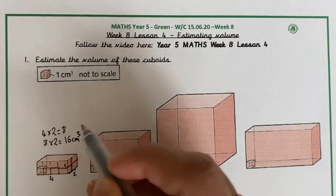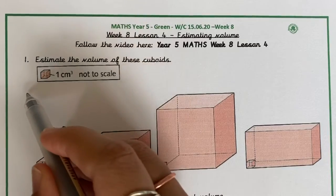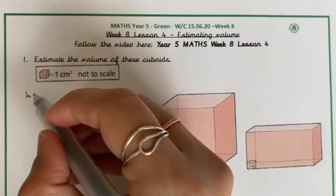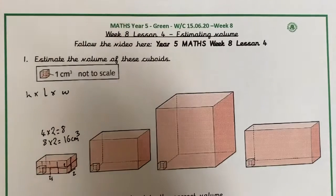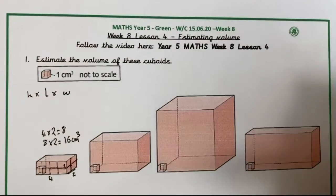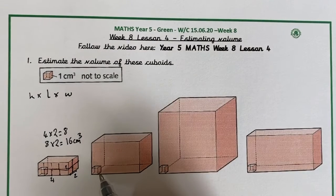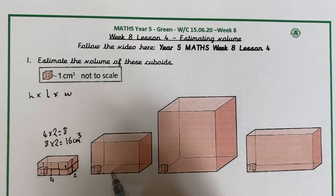To find the volume, we do height times length times width. So 4 times 2 times 2 equals 16cm cubed. I'm going to do the same with the next cuboid.